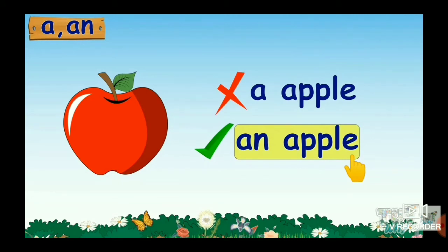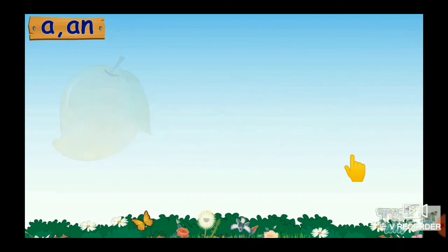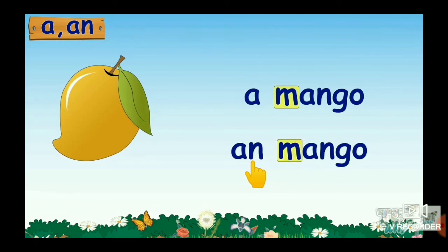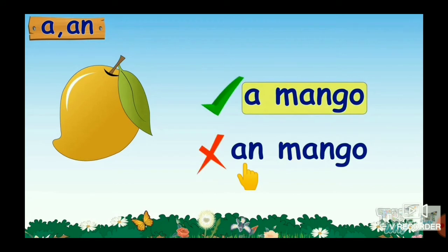Next example. What is this? This is a mango. So, here we have to use A mango or AN mango, children. Mango starts with sound of M. So, it is a consonant. That's why we use A mango only. Understood?